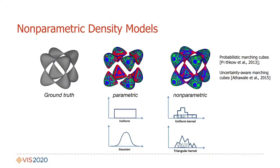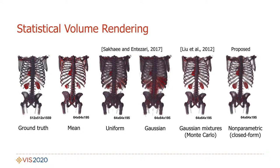Several recent studies advocated the use of non-parametric density models for improved characterization of data uncertainty. However, non-parametric models present challenges such as increased memory and computational requirements. In this work, we propose an efficient non-parametric framework for volume rendering in the context of uncertain data and show their effectiveness in classifications via comparisons with other statistical models.